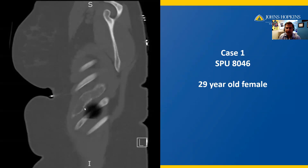Along the edges, you see this white line, which corresponds to periosteal new bone formation, which is a sclerotic process. Altogether, what this is telling us is that this is a slow-growing, indolent process, meaning that the body has enough time to respond to and react to the presence of this mass with new periosteal bone formation that expands the bone but does not destroy the bone.